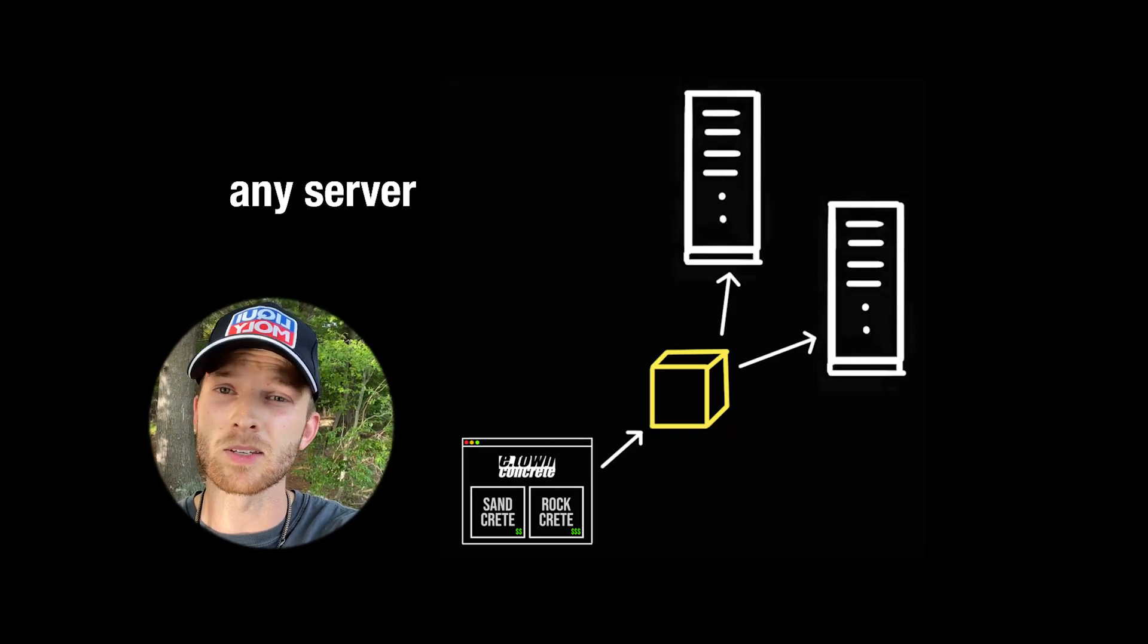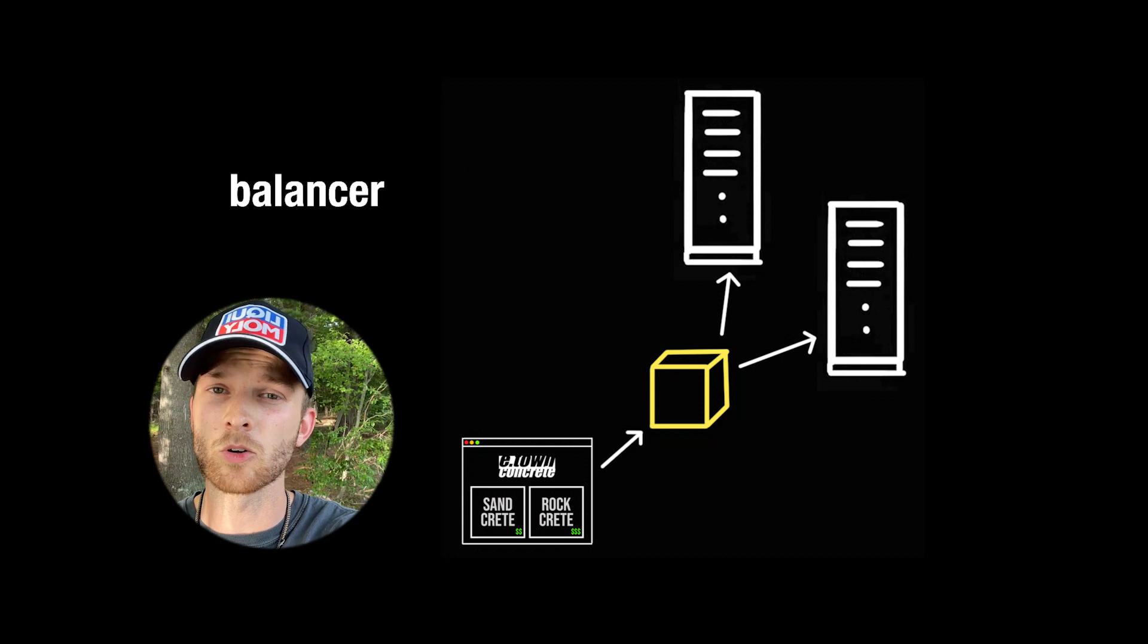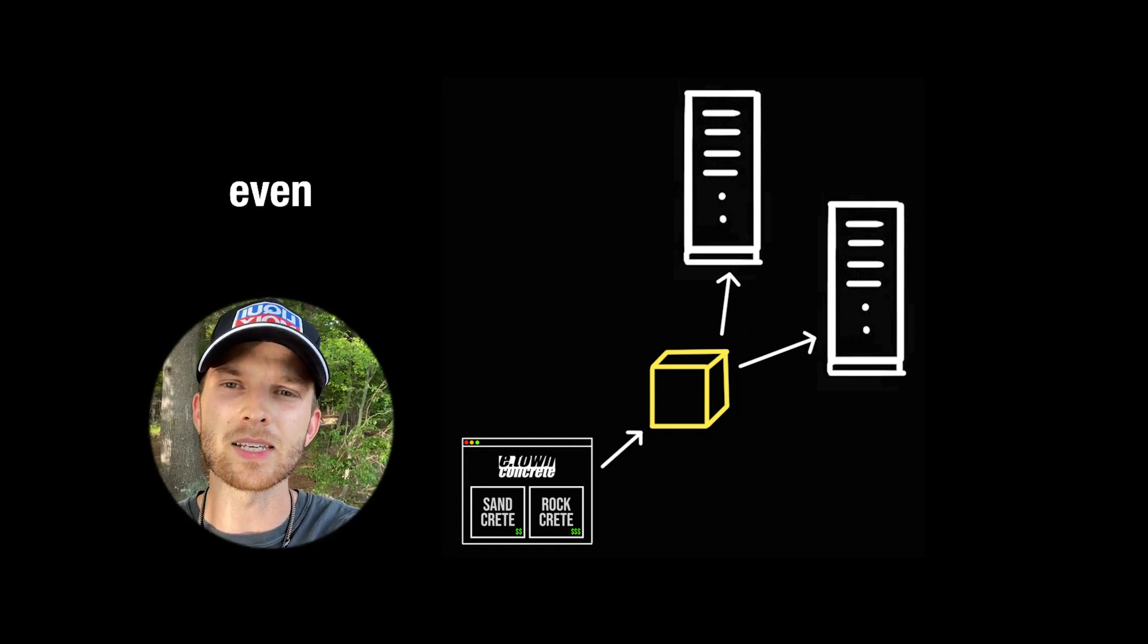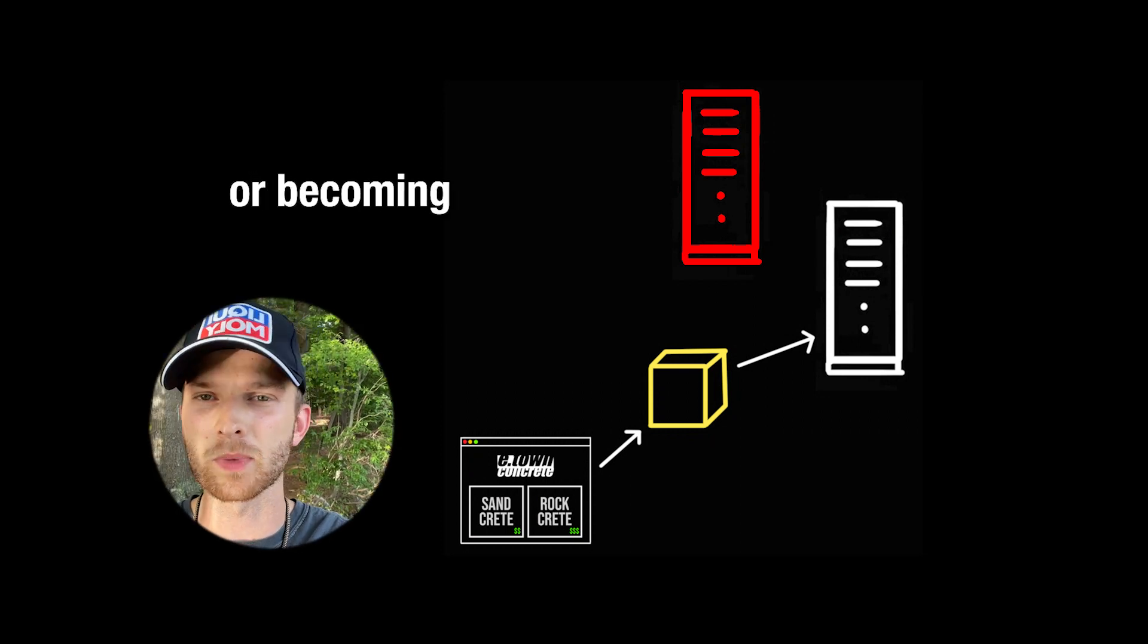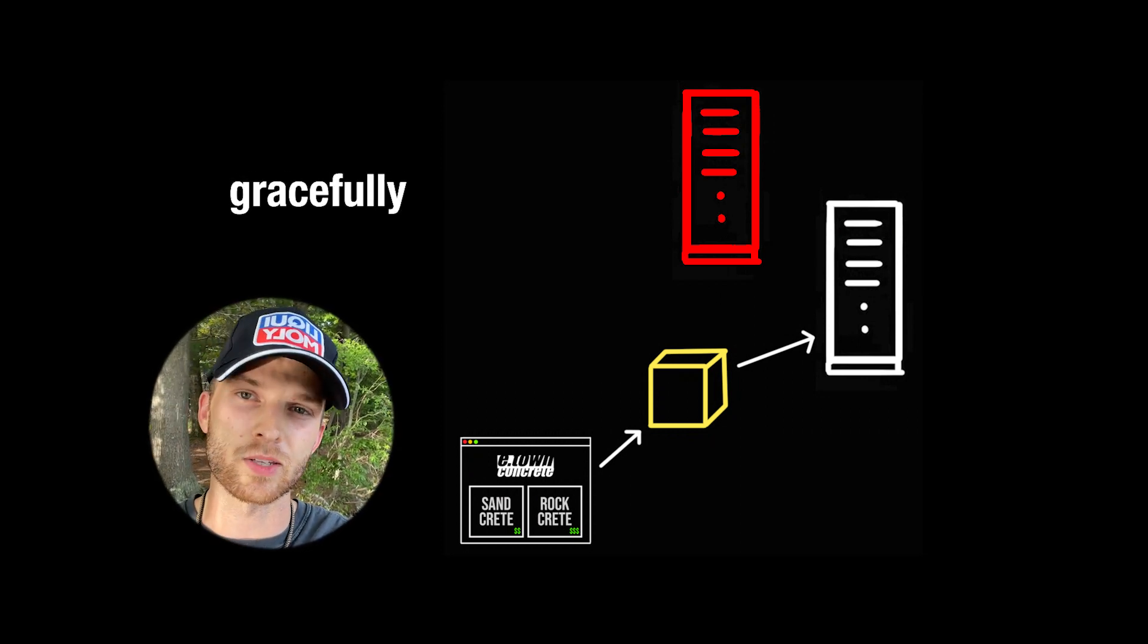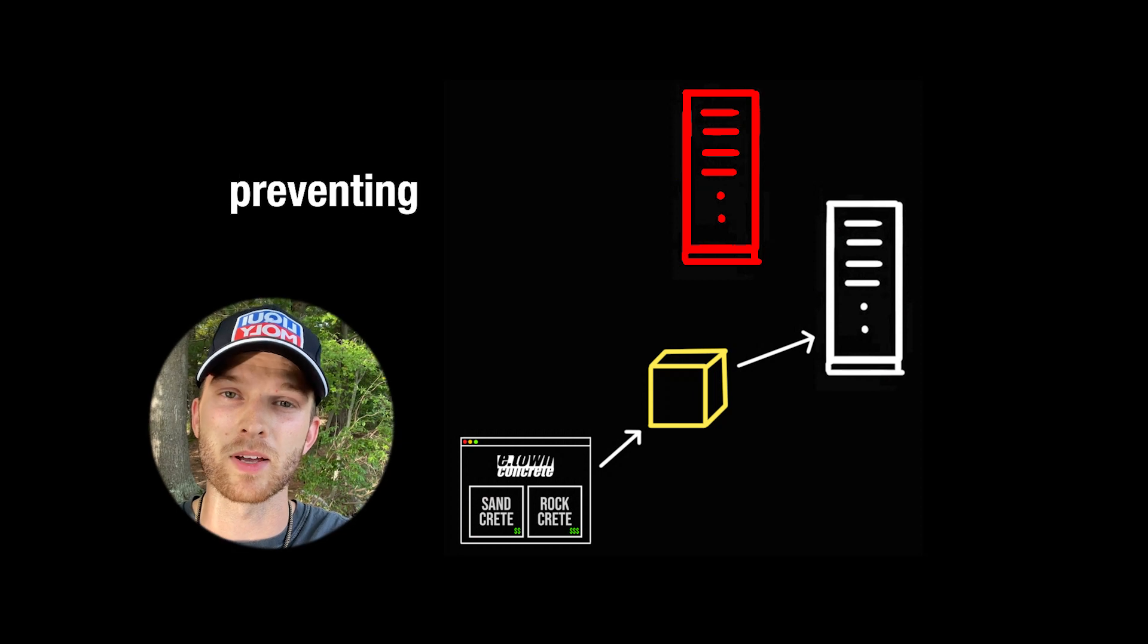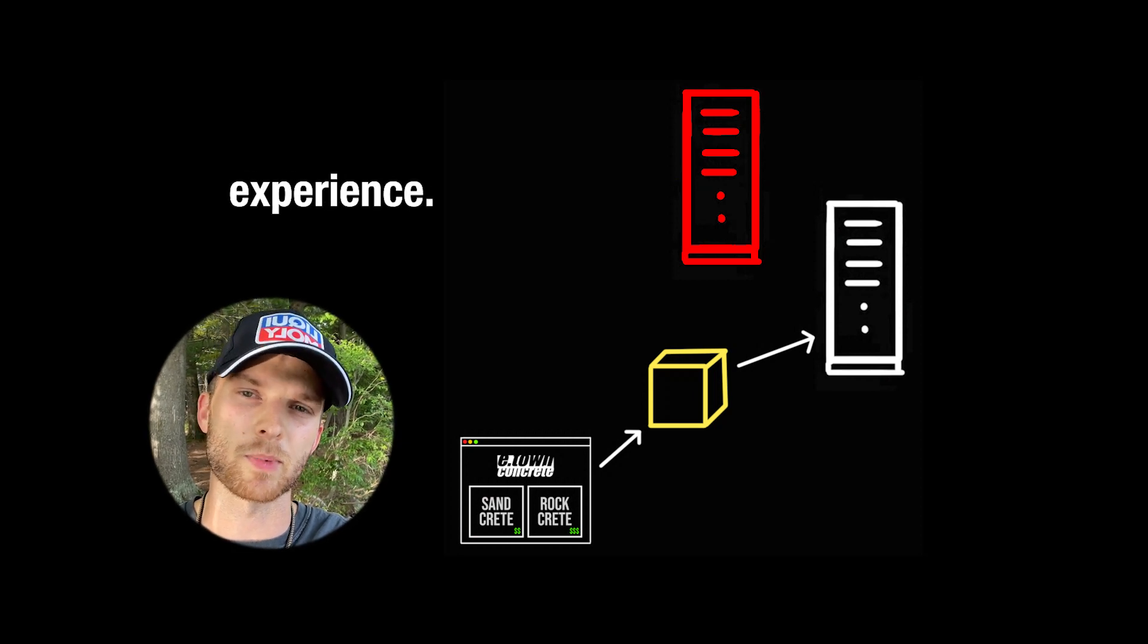Ordinarily, to prevent any server from becoming overwhelmed, the load balancer distributes the incoming traffic in an even manner. It constantly keeps an eye on the server's health. If a server shows signs of struggling or becoming unavailable, the load balancer will gracefully redirect traffic away from it, preventing disruptions to the shopping experience.